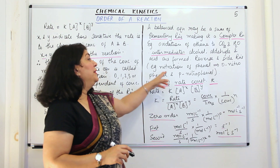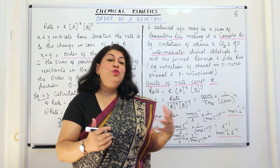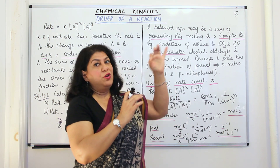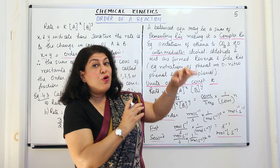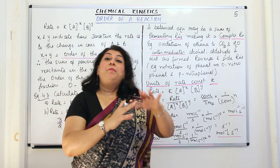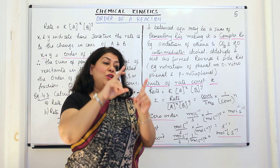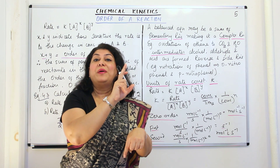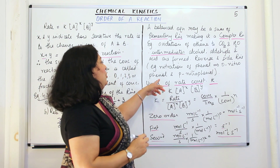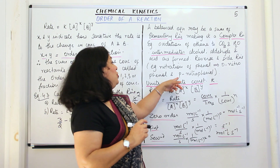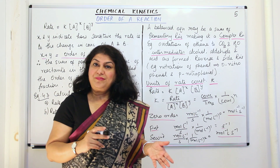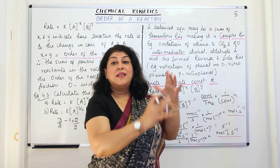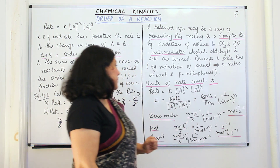For example, when the nitration of phenol is done, you can get two products. Either an ortho substitution takes place, giving orthonitrophenol, or a para substitution takes place — that is, the one and four carbons of the benzene ring are substituted — giving paranitrophenol. You will study the details of this when you study organic chemistry.